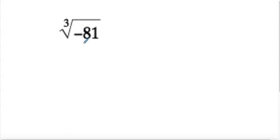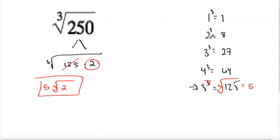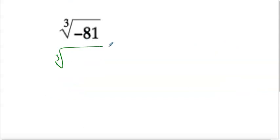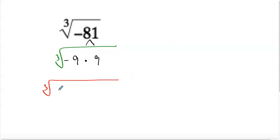So what number times itself three times gives us 81? I don't know off the top of my head, but one technique is to write down the list we already have. I see 3 cubed is 27, and I know that 27 goes into 81. So 81 is negative 9 times 9, and if I break this down further I get the cube root of negative 81 equals negative 3 times 3 times 3 times 3. So I broke this all the way down to its prime factors.